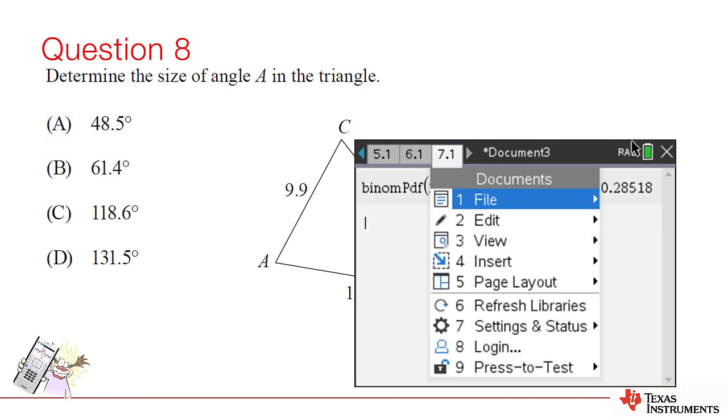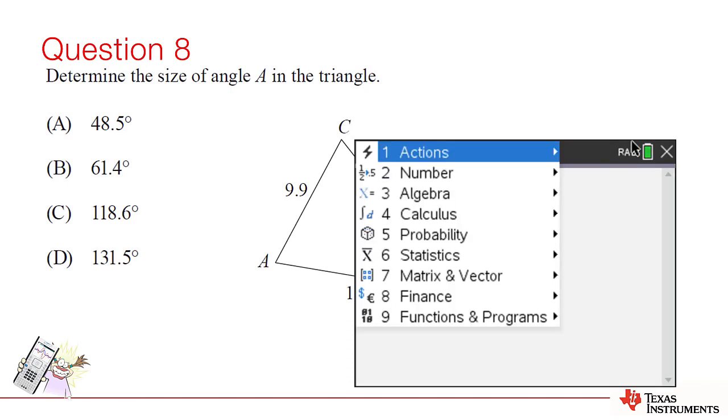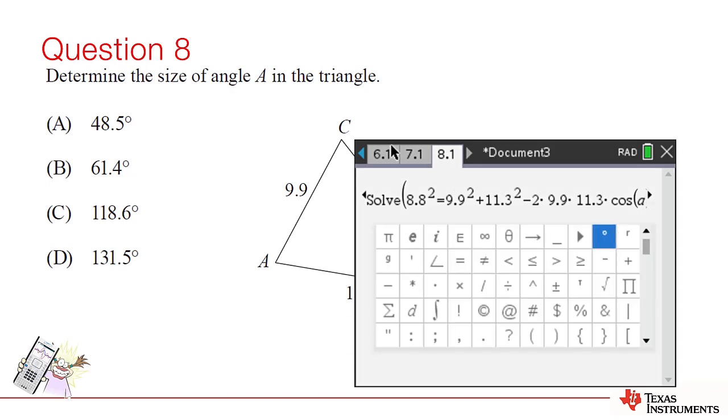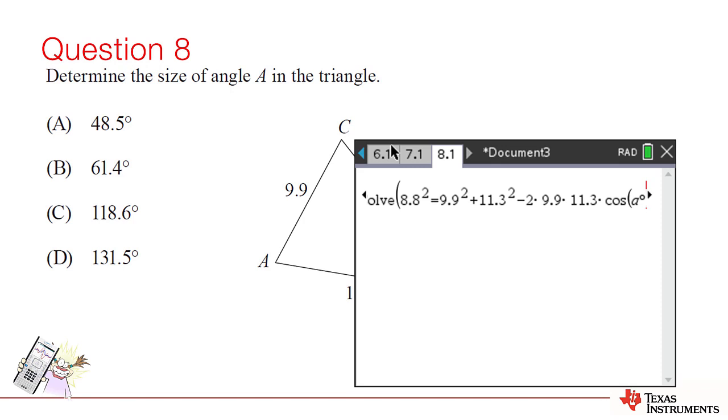If you didn't know this little fun fact about triangles, you could use the solve command in conjunction with the cosine rule. So, we'll solve 8.8 squared equals 9.9 squared plus 11.3 squared minus 2 times 9.9 times 11.3 times cos of A and solve for A. But, if your calculator is not set to degrees and you don't wish to change the mode, you can just include the degrees sign for angle A and the answer will automatically pop up in degrees. So, our answer is option A.